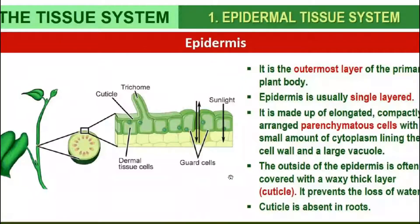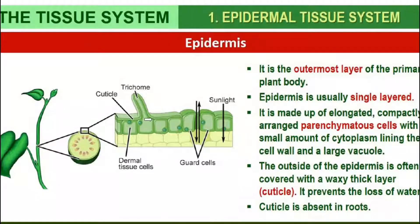Looking at the diagram, you will be able to understand the epidermal tissue system more clearly. The epidermal cells are elongated parenchyma cells. One important feature is that on the outermost surface there is a waxy thick layer.